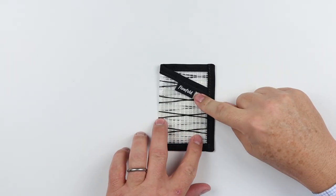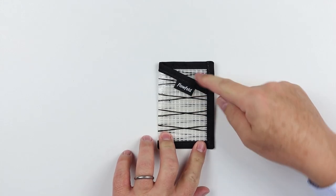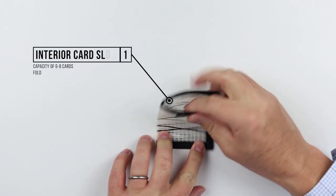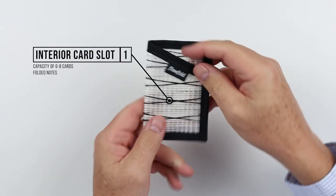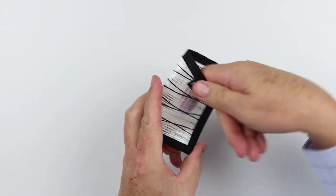This is a very simple wallet. It has a capacity of six to eight cards, which go right in here. Nothing else on the top or on the back. Just this one card slot right here.